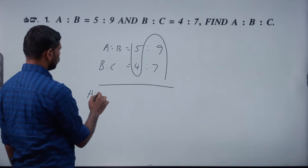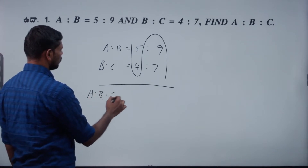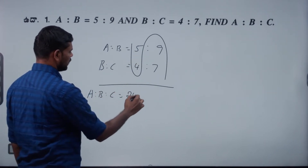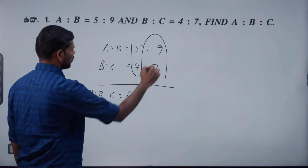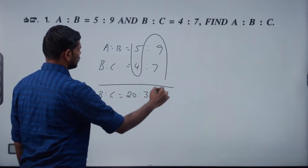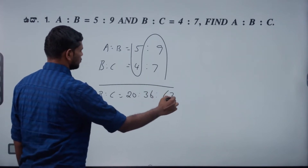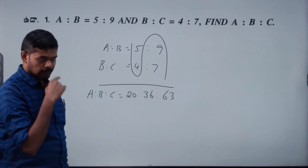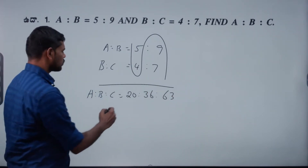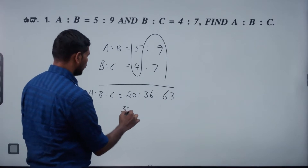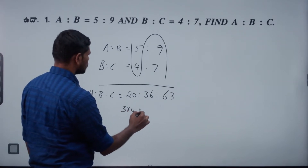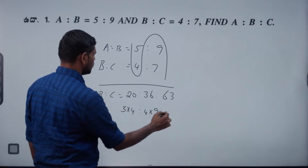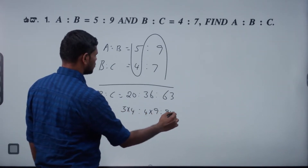5 into 4 is 20, is to 9 into 4 is 36, is to 9 into 7. So: 5 into 4 is 4 into 9 is to 9 into 7. Doubt? No problem.